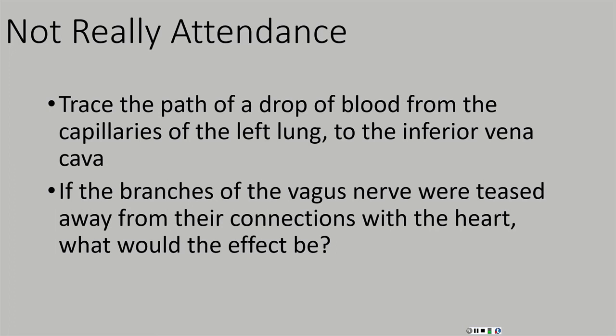Trace the path of a drop of blood from the capillaries of the left lung to the inferior vena cava. If we're in the capillaries of the left lung, we're going to leave the lung with oxygenated blood heading back to the heart. From the capillaries of the left lung, we go into venules carrying oxygenated blood, then into bigger veins, and coming from the left lung, we come back in the left pulmonary veins and empty into the left atrium. Blood from both lungs empties into the left atrium. From the left atrium, we pass through the bicuspid valve into the left ventricle. From the left ventricle, we leave the heart by passing through the aortic semilunar valve into the aorta.